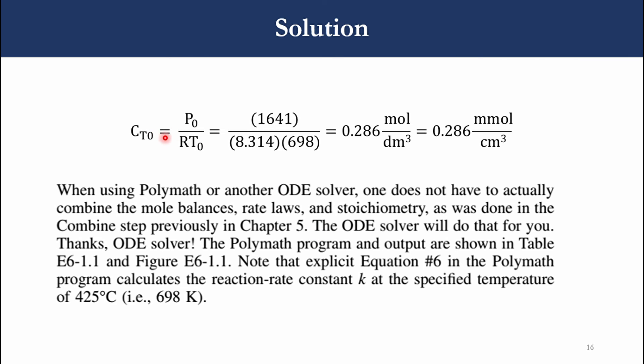Now CT0 equals P0 over RT0. P0 is 1641, R was 8.314, T0 is 698 Kelvin. Accordingly we get 0.286 mole per cubic decimeter or 0.286 millimole per cubic centimeter. This is the value of CT0. We can see that there are multiple equations generating in the system.